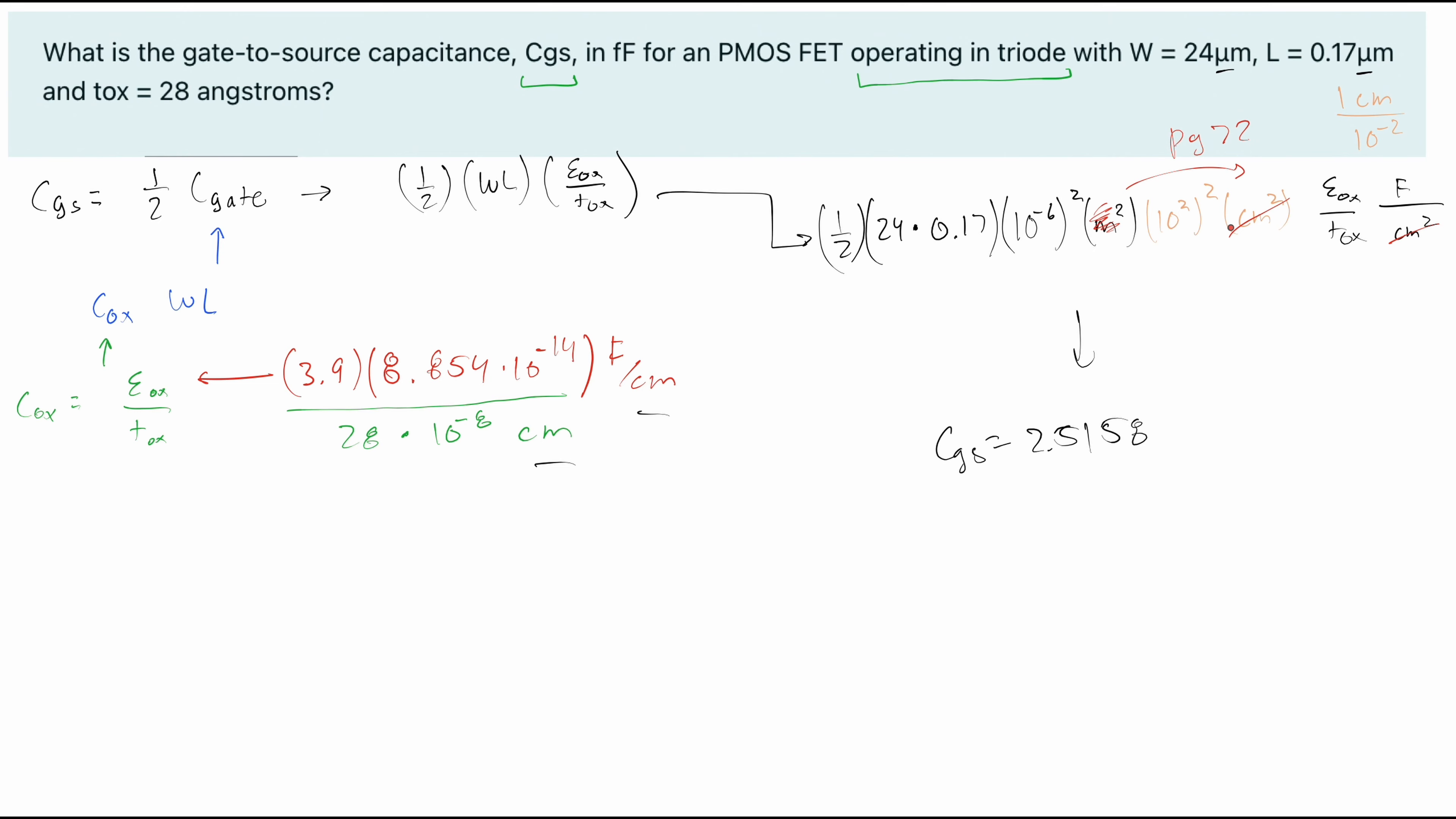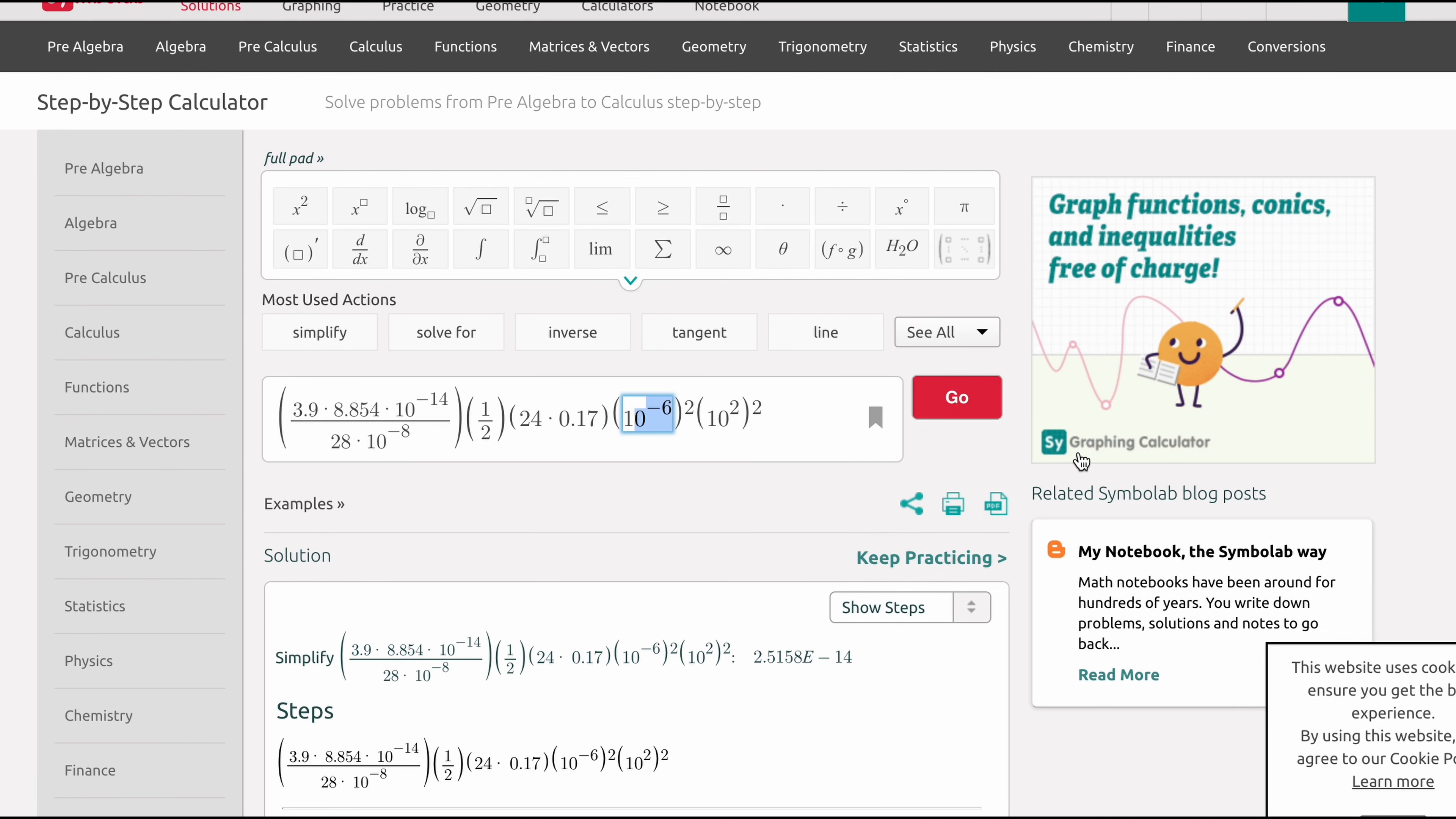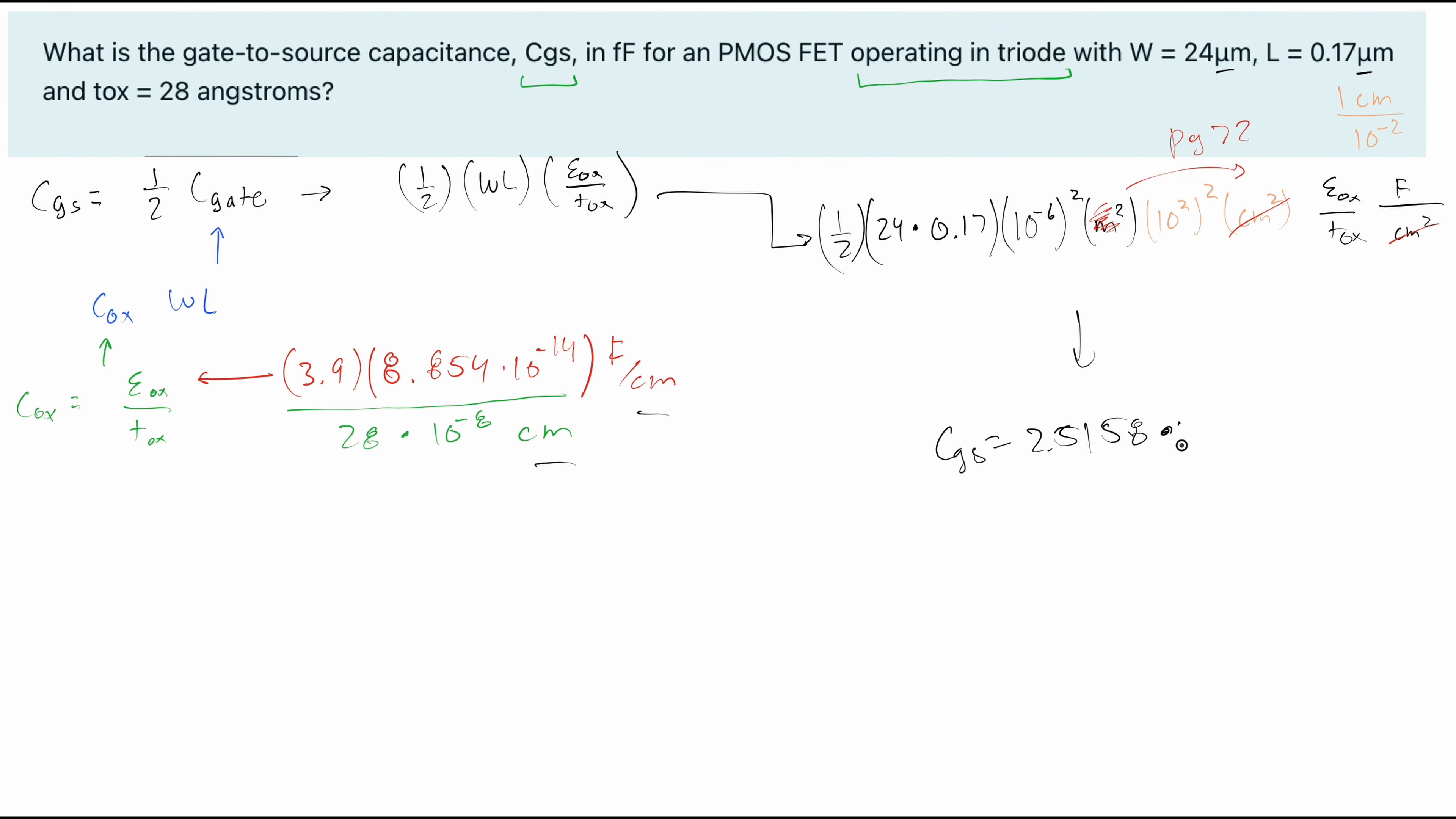So we have 2.5158 times 10 to the negative 14. And this is in farads. We want this in femtofarads. And one femto is just 10 to the negative 15. So if we bring that on top, we're basically multiplying it by 10 to the 15th. So all we need to do is move this over one. So our CGS is going to equal 25.158. And this is in our femtofarads. So that's how we would go about solving for this problem and anything like it.